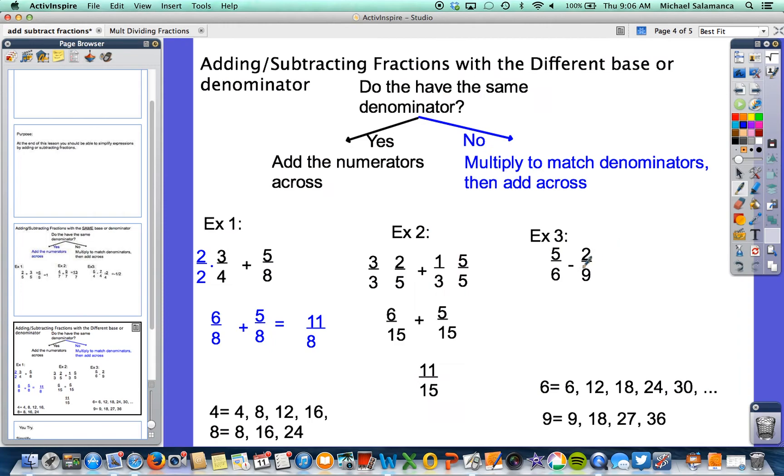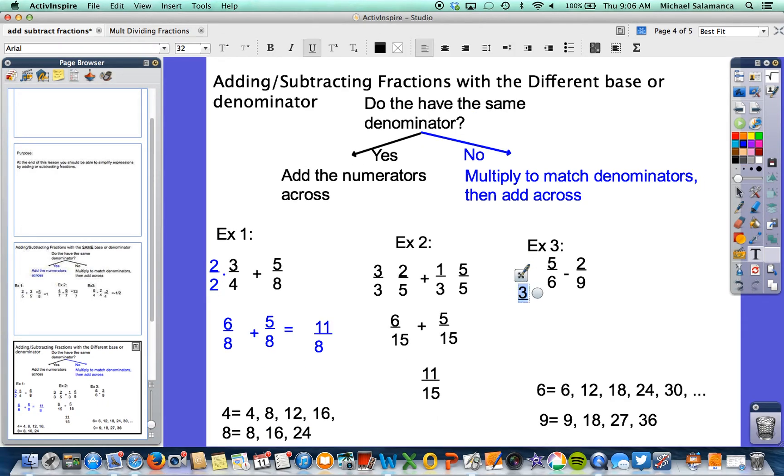In order to make the 6 an 18, we have to multiply that by 3. And again, we do to the bottom, we do to the top. So that gives us 15 eighteenths.